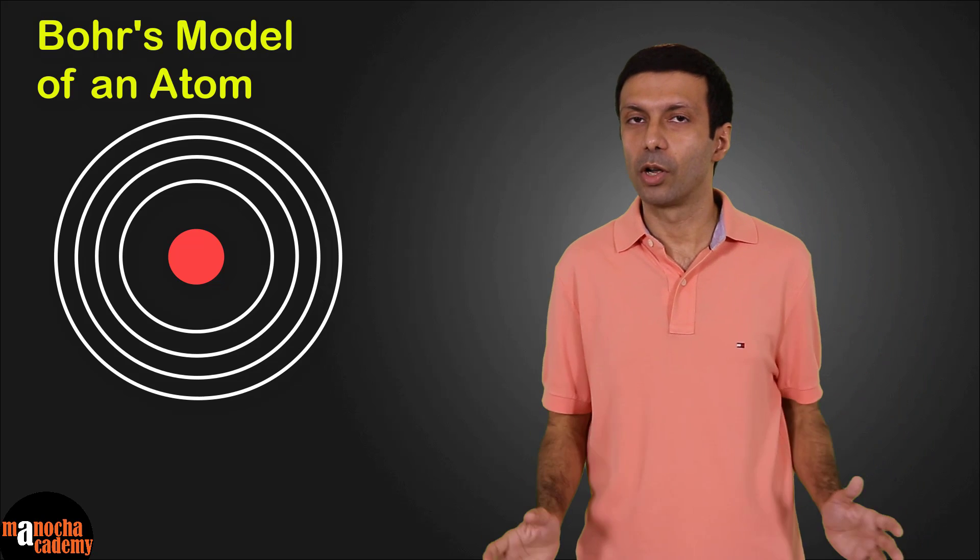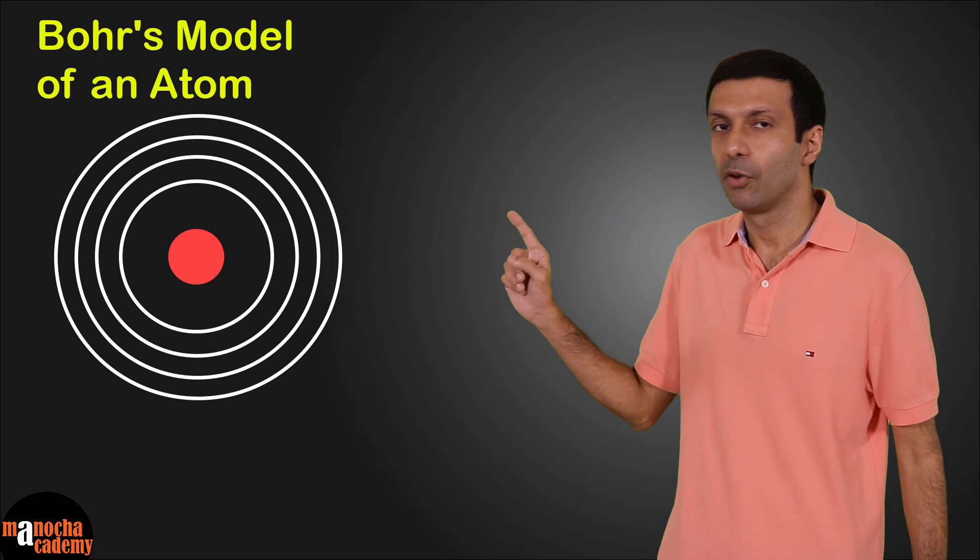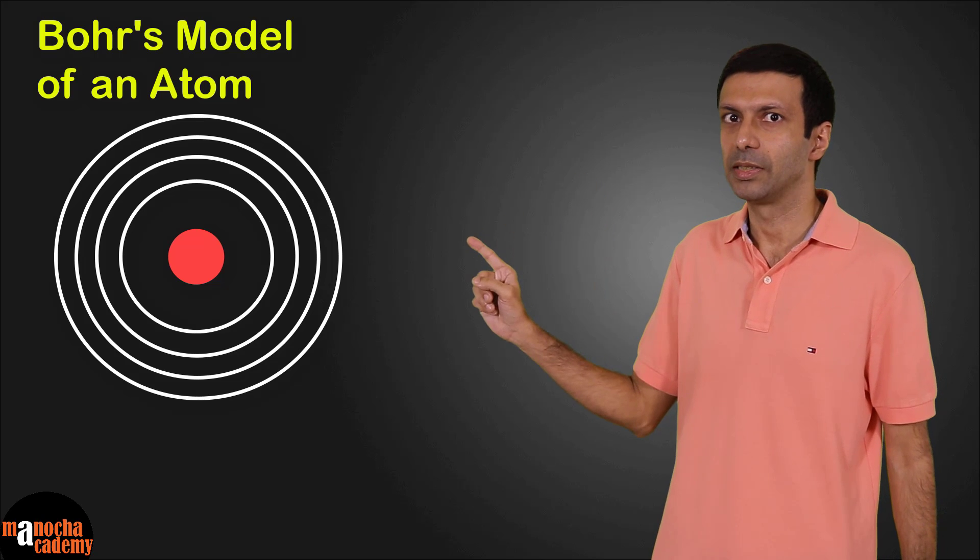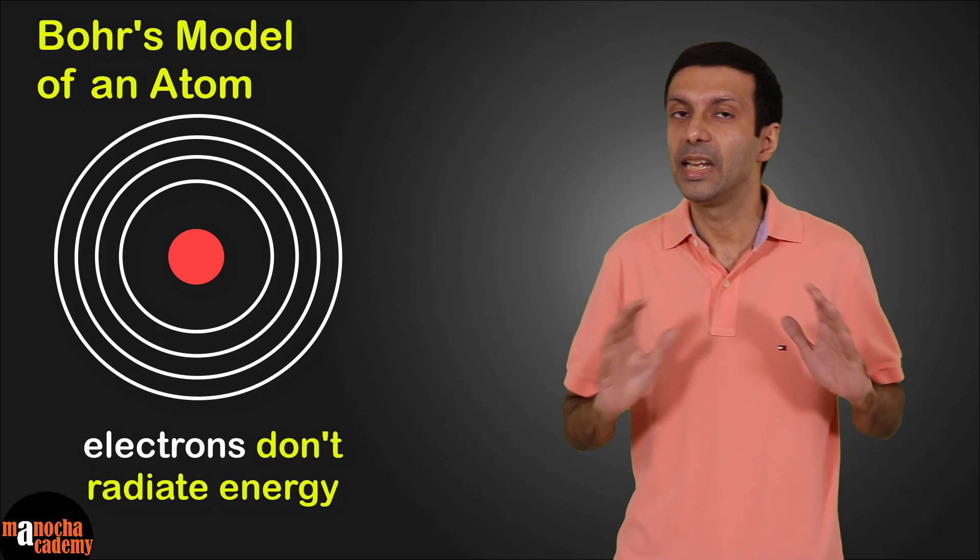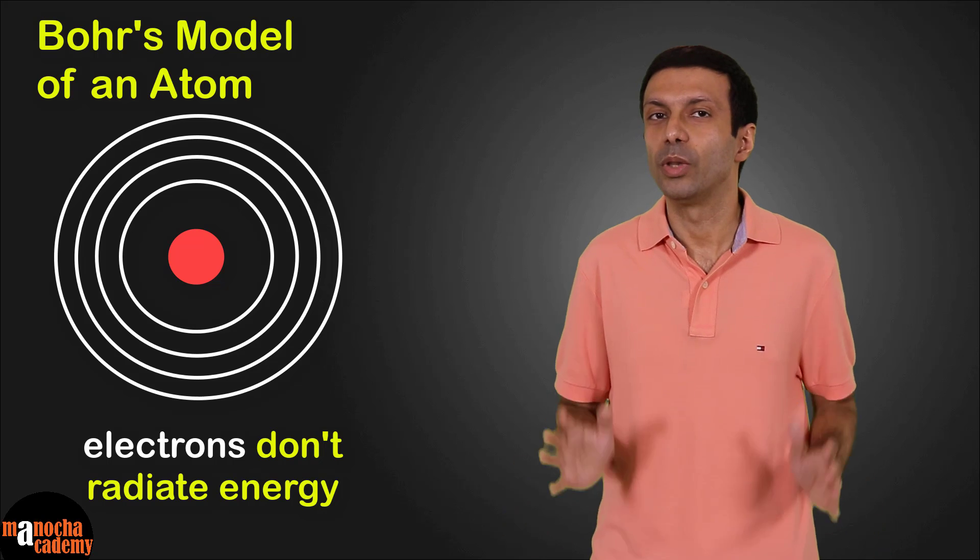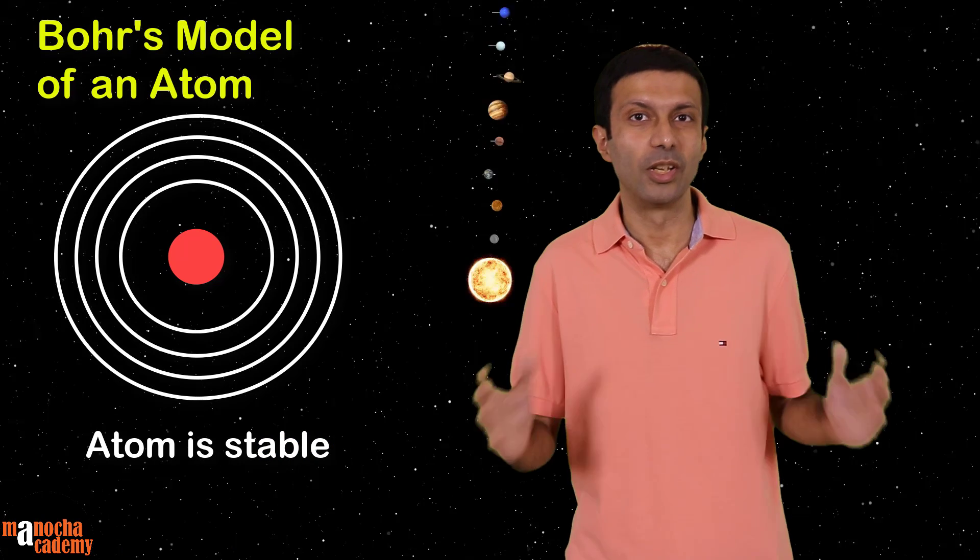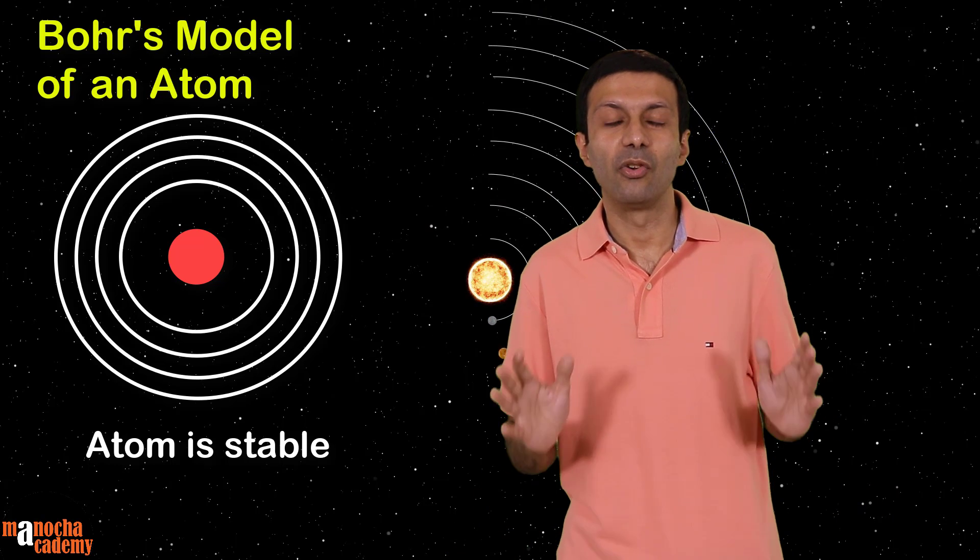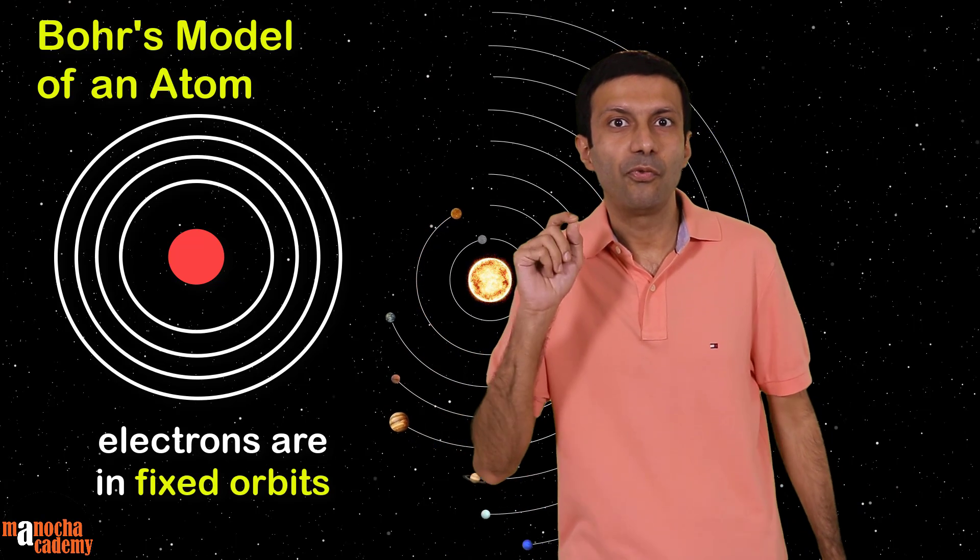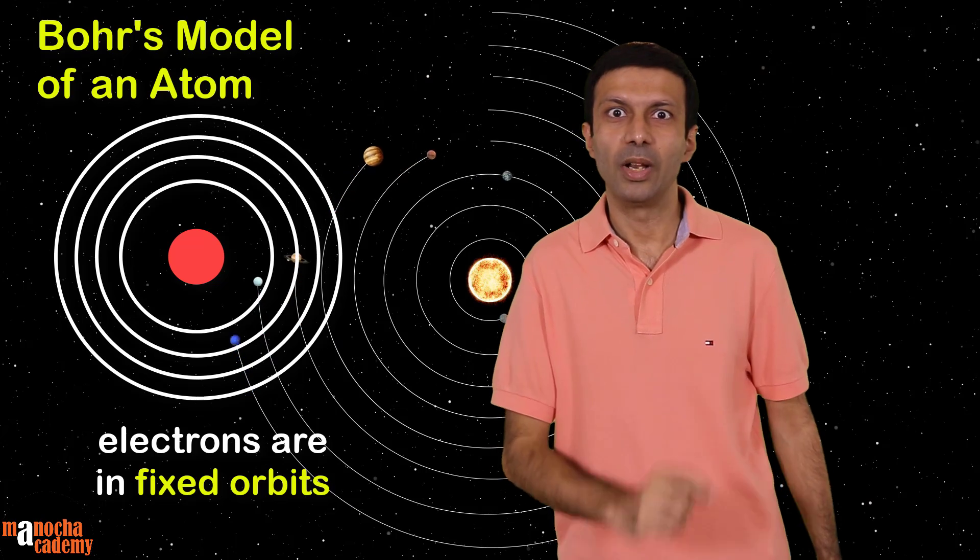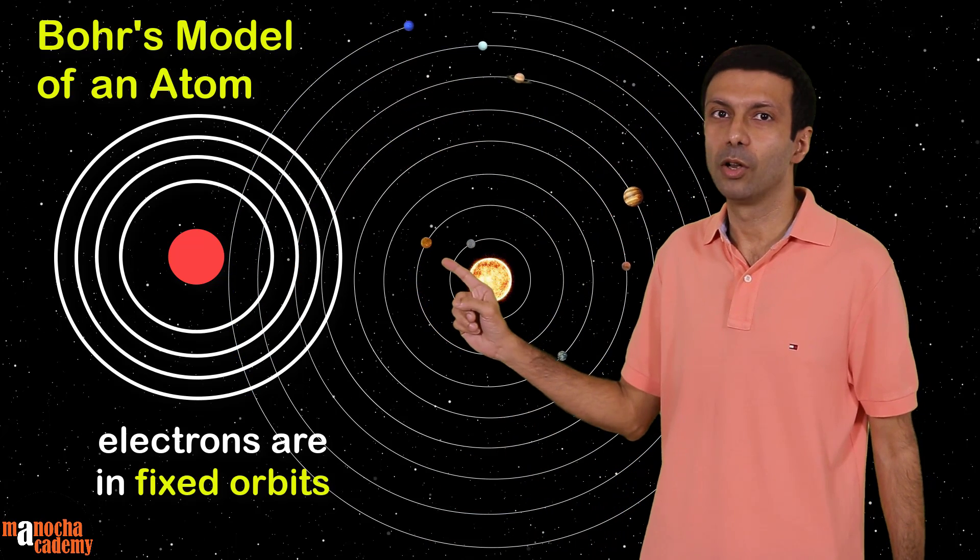So Bohr proposed a new model of an atom to correct this. According to Bohr's model of an atom, the electrons can revolve only in certain orbits where they do not radiate energy. So the atom is stable. It's just like the solar system where the planets revolve around the sun in fixed orbits. So let's take a look at Bohr's model of the atom.